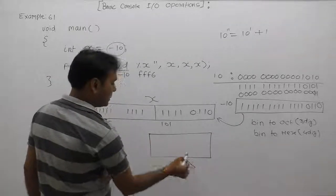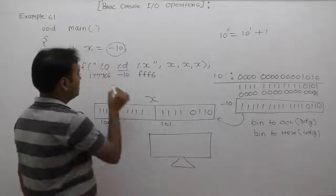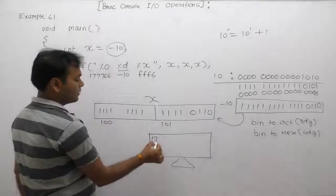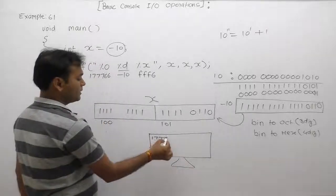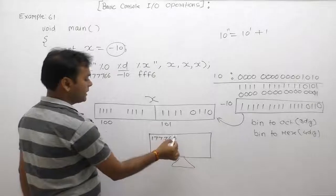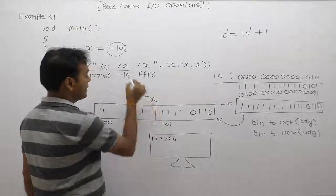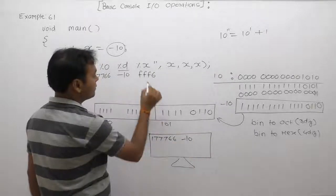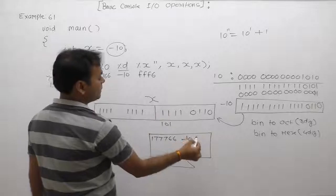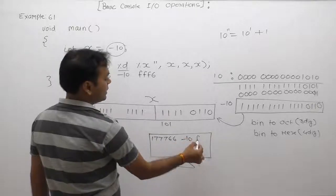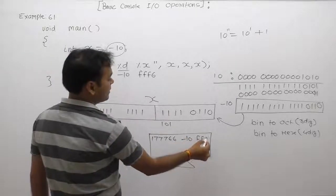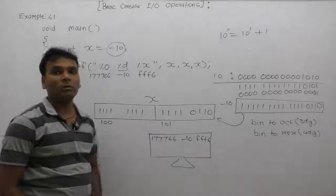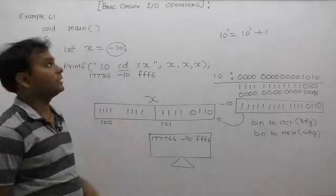The final output: in case of octal representation it prints 177766, in case of decimal number system it prints minus 10, and in case of hexadecimal the result is FFF6. This is the final output in that case.